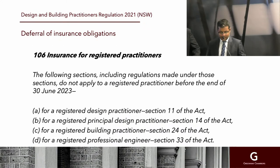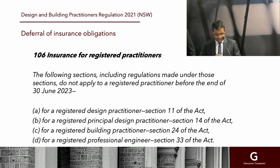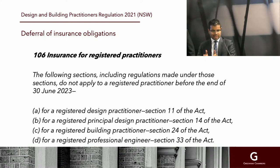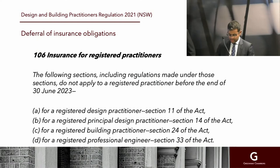The next significant issue is insurance. Under a number of provisions of the DBPA — Sections 11, 14, 24, and 33 — all the different prescribed categories of registered professionals, including registered design professionals and registered engineers, are required to have insurance. Although the regulations come into effect on 1 July, the requirement to have insurance does not actually come into effect until 30 June 2023. So there is a bit of leeway for those professionals to get their insurance sorted out.